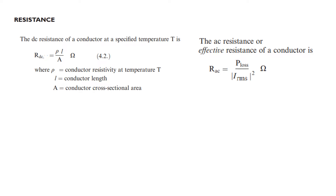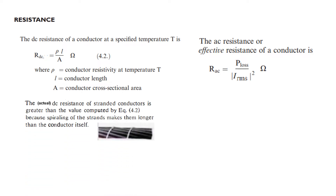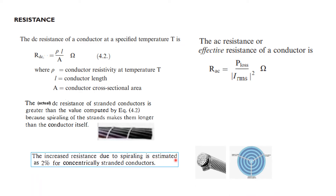The actual DC resistance of a standard conductor is greater than the computed value. When we calculate the length, the actual length is greater than L because of spiraling. The increased resistance due to spiraling is estimated to be 2% more, so the length is 2% more. We multiply by 1.02 to get the actual resistance. This applies to the concentrically stranded cable.